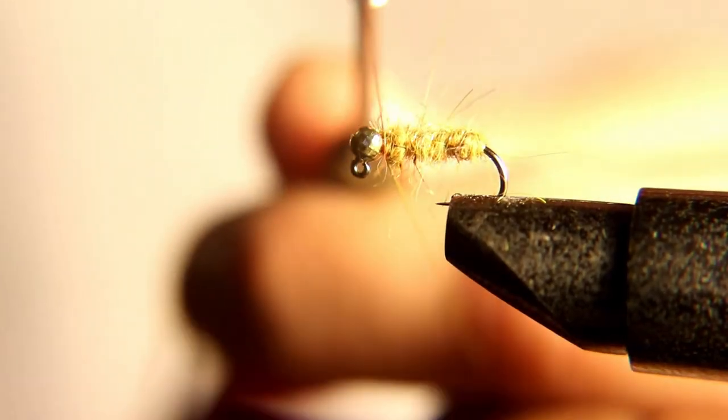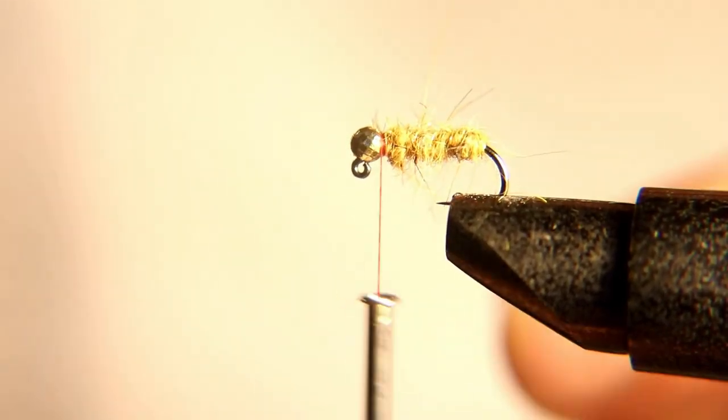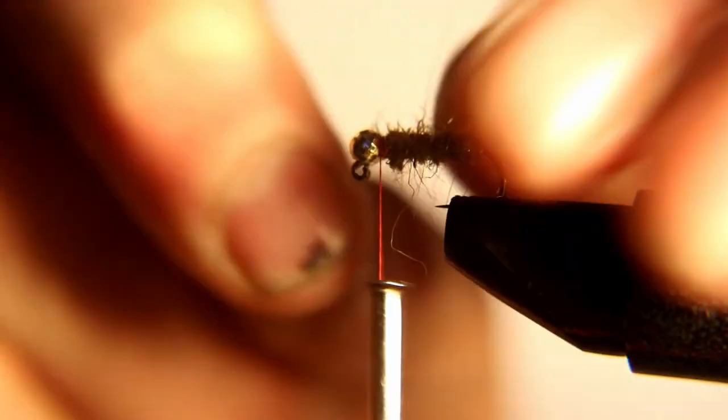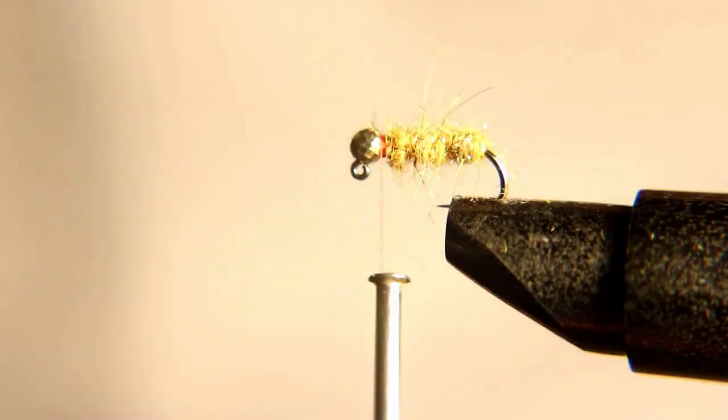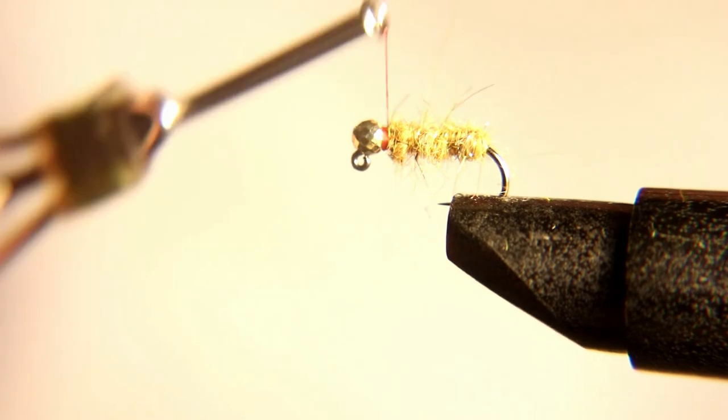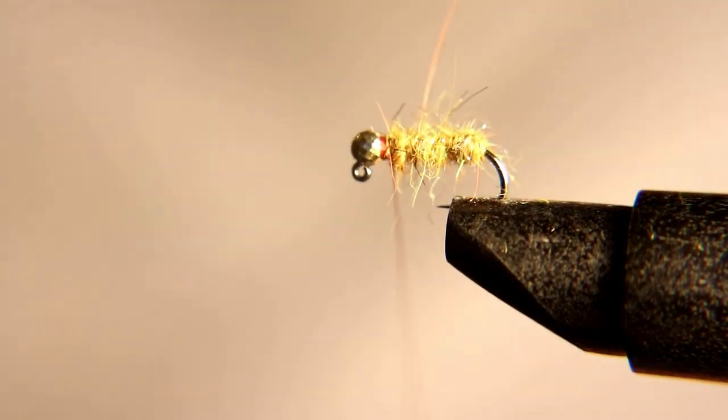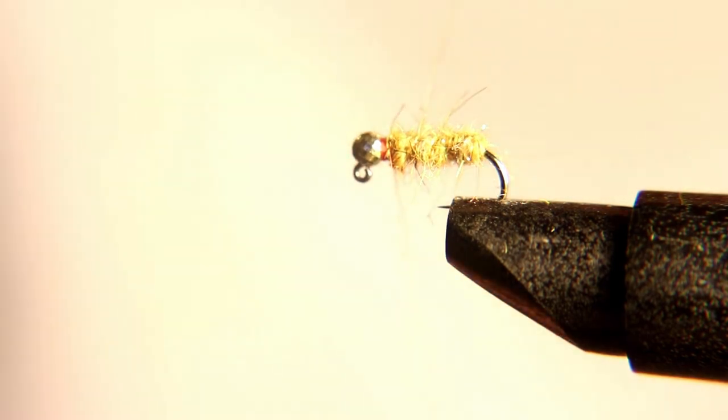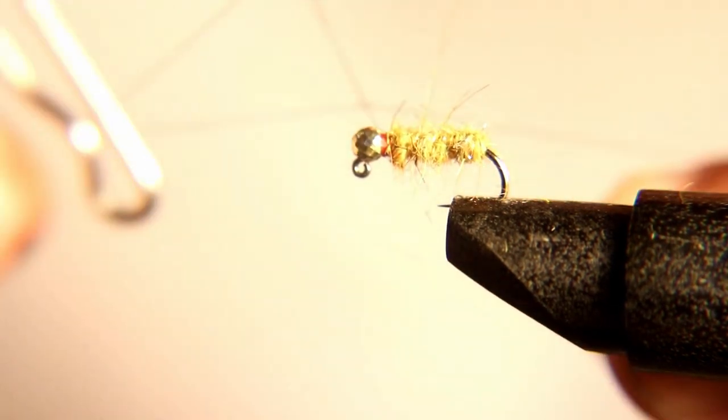You can also pull the flash over and tie it down right behind the bead, tie and throw a whip finish on it.